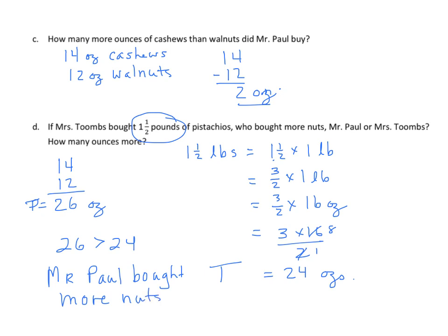How much more? Simply twenty-six minus twenty-four equals two ounces. Mr. Paul bought two ounces more nuts than Mrs. Toombs.